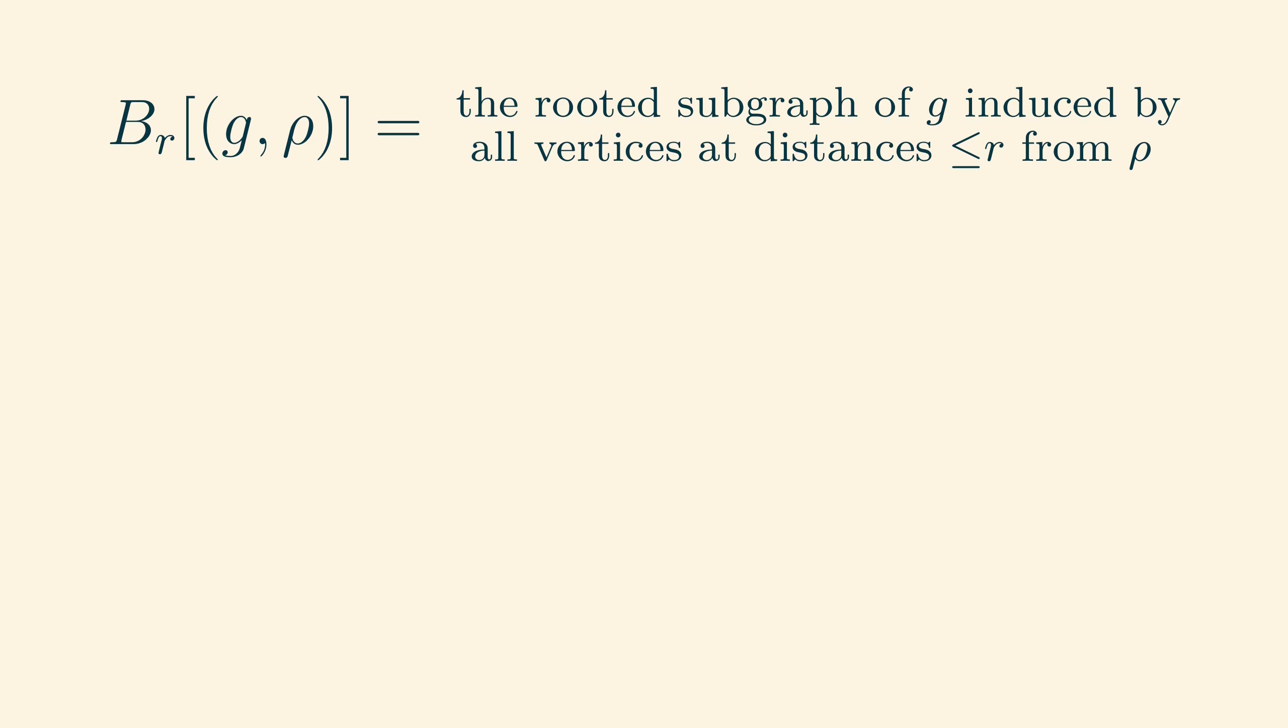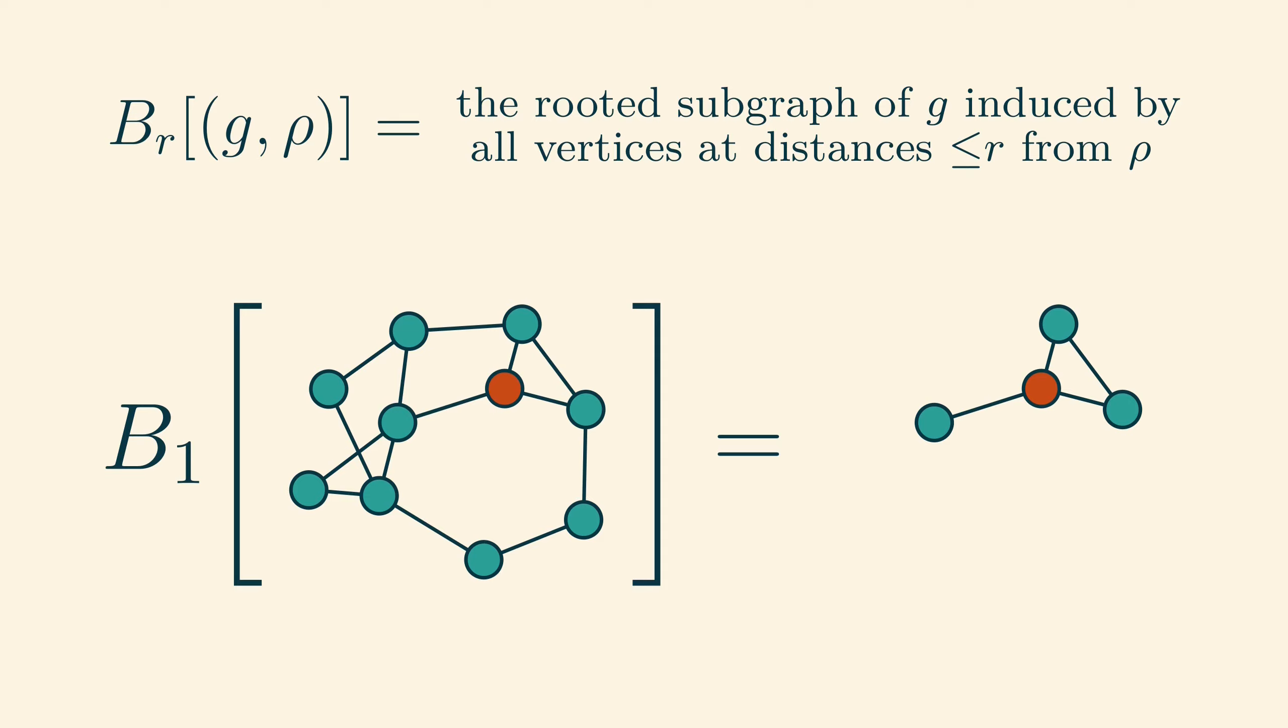Given a non-negative integer r, we can consider the ball of radius r in a rooted graph (g, ρ). This is defined to be the rooted subgraph of g induced by all vertices whose distance from ρ is at most r. For example, the 0 ball in any rooted graph is just the root. The 1 ball consists of the root and the neighbours of the root, including connections between the neighbours. The 2 ball adds the vertices at distance 2 from the root, and so on. If a graph is finite, then all large enough r balls will be the same.